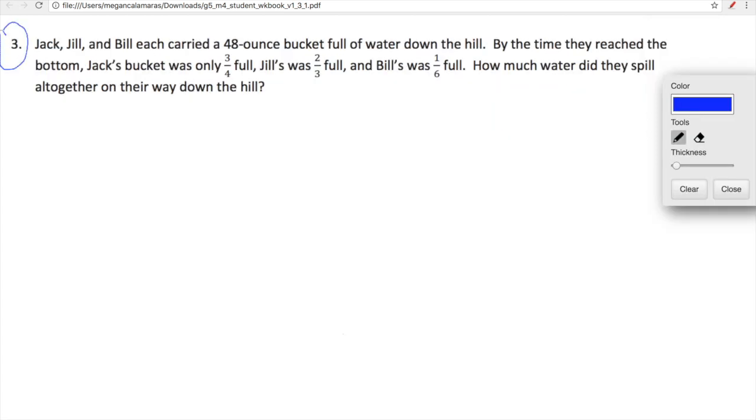I found a really good one here. Georgie's a little nervous about it, but I promise they can handle it. Let's read this problem. We have Jack, Jill, and Bill each carried a 48-ounce bucket full of water down the hill. By the time they reached the bottom, Jack's bucket was only three-fourths full, Jill's was two-thirds full, and Bill's was one-sixth full. How much water did they spill altogether on their way down the hill?